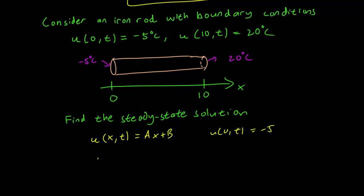So we know that u(0) is minus 5. So we plug that in. We get u(0,t) equals minus 5, but it's also equal to a times 0 plus b. So this equals b, which implies that b is minus 5.